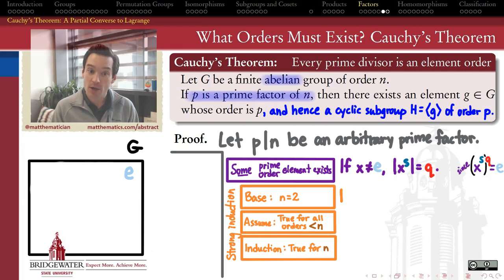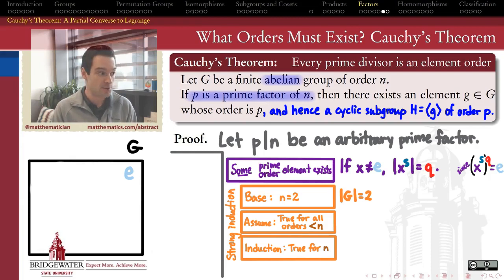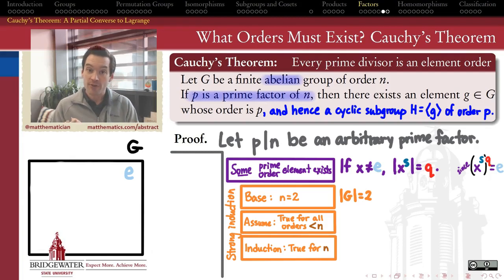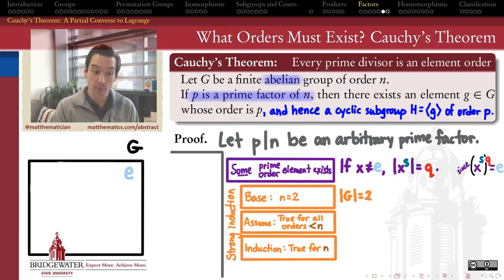Notice we didn't use the abelian hypothesis at all — this holds for every finite group. The problem is we don't know that the prime Q is the same as the prime P we're working with in this proof. That's what we need to establish next, using the induction argument.